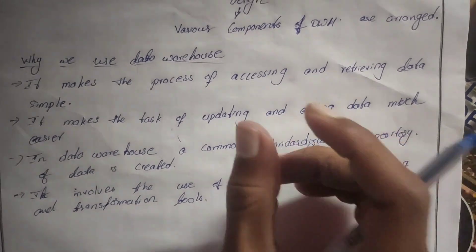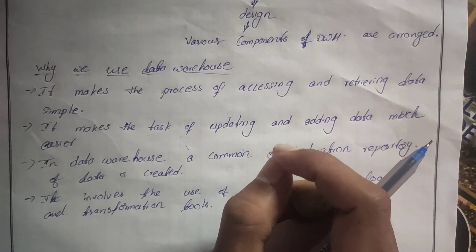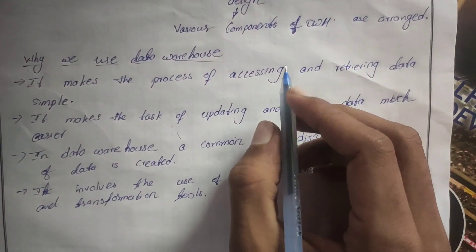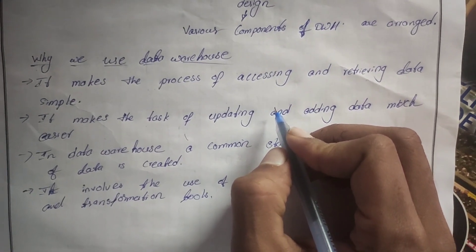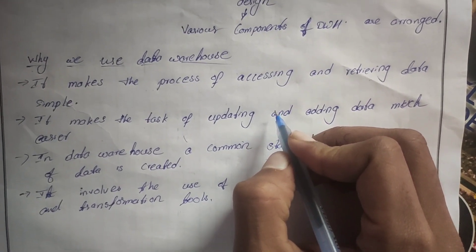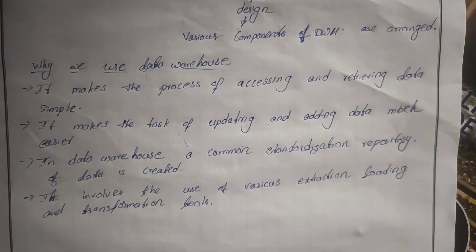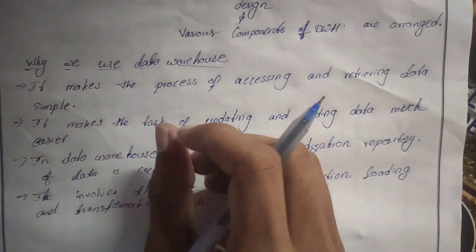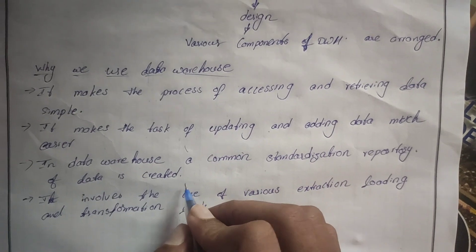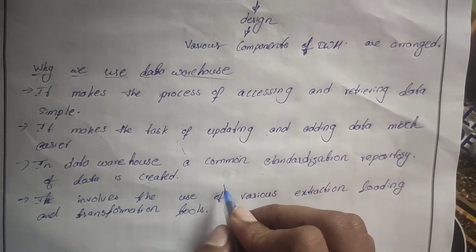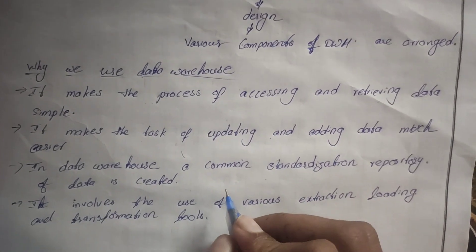In the source layer, updating and adding data is made much easier. Next, in a data warehouse, a common standardized repository of data will be created.